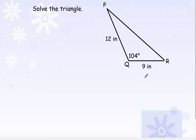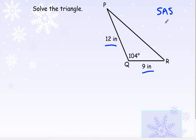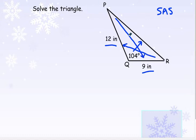We're going to practice a few examples. We're going to solve this triangle. Do you see where I've got a side, then an angle, then another side? So this is side-angle-side. I would not be able to use law of sines because I don't know the side across from this angle, and I don't know this angle across from that side or this angle across from that side. Law of sines just won't work. So we're going to do law of cosines.